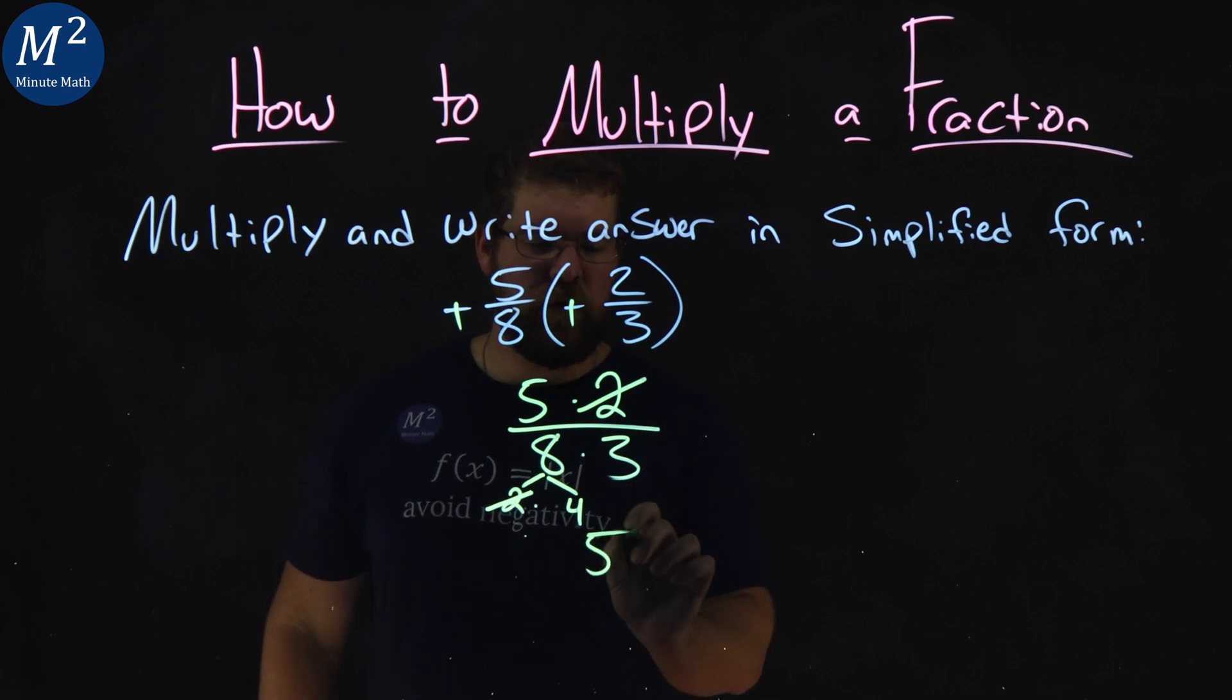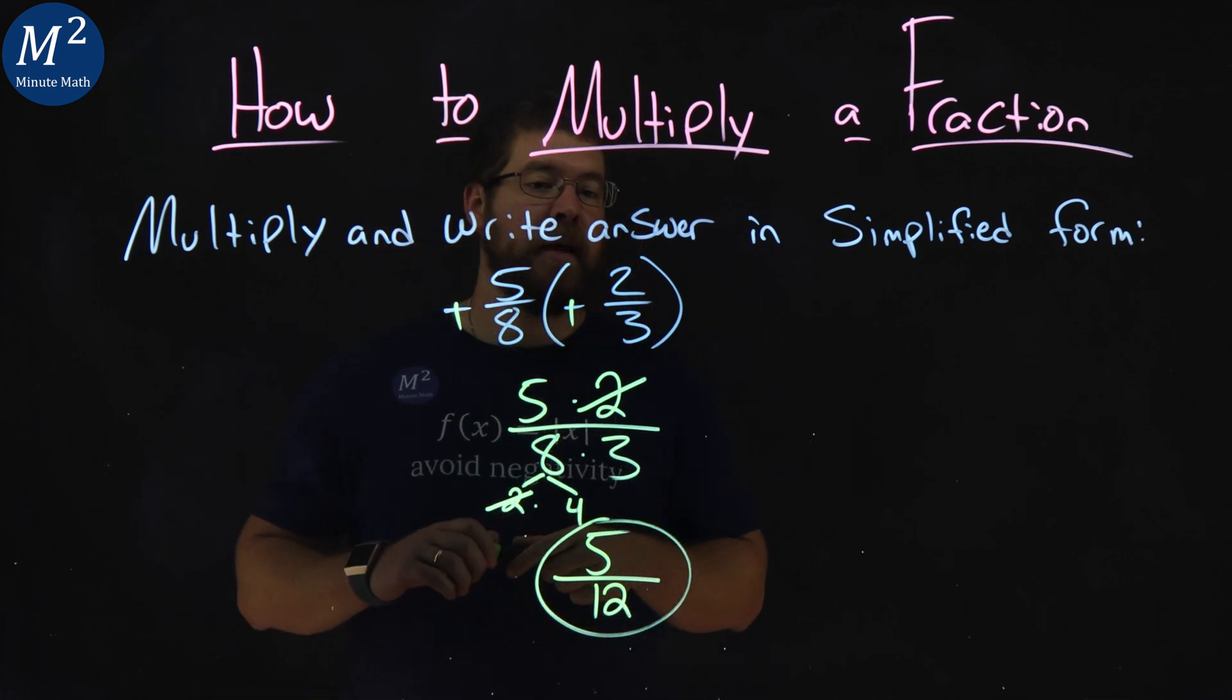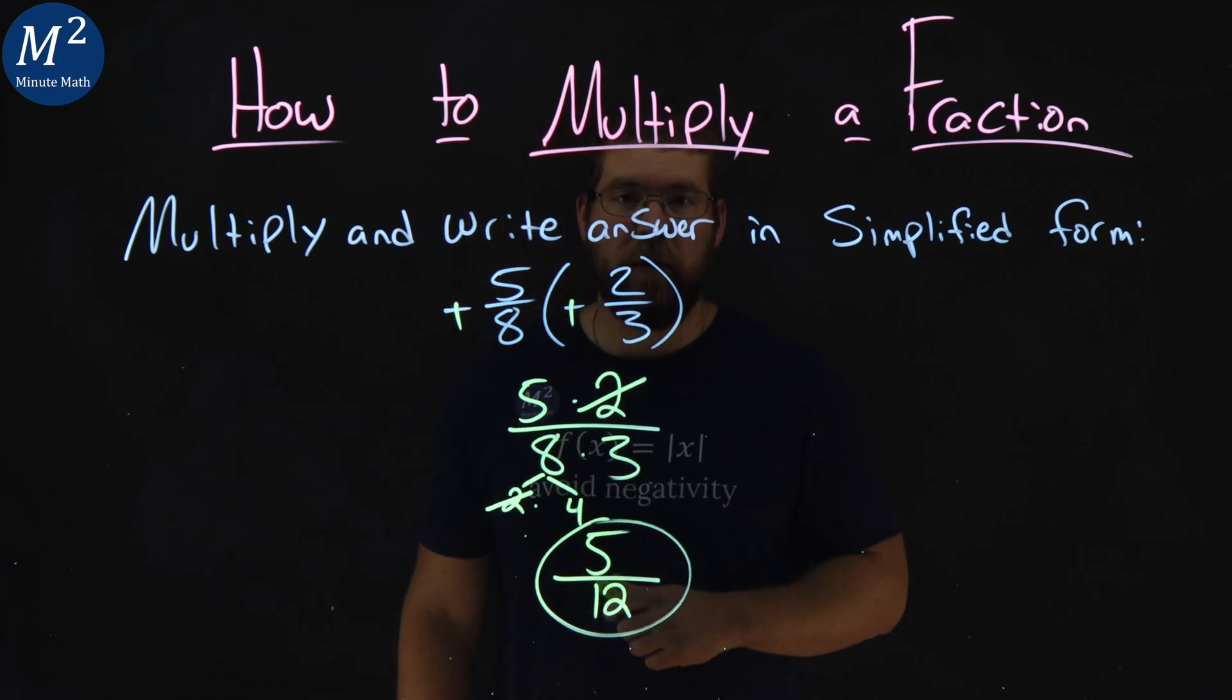So rewriting this, 5 is in the numerator over 4 times 3, which is 12. And there we have it. Negative 5/8 times negative 2/3 simplifies to be 5/12.